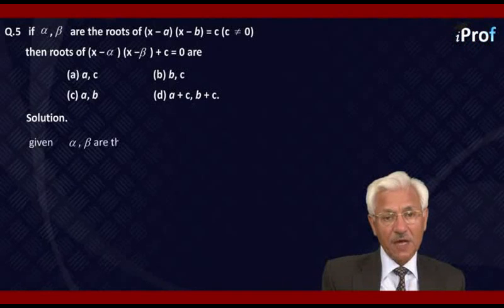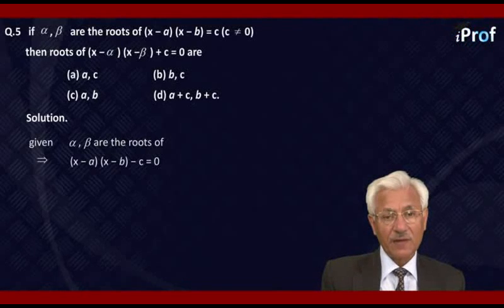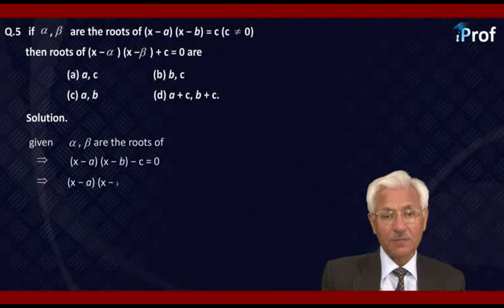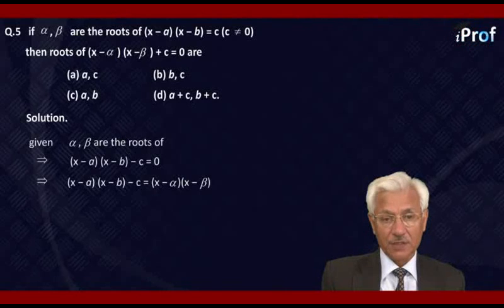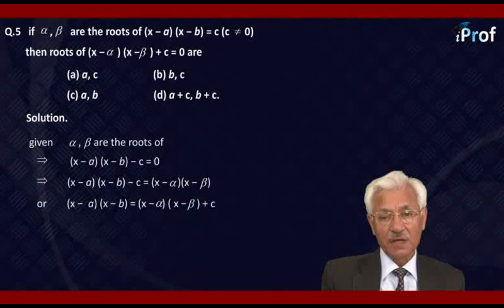Given α and β are the roots of (x - a)(x - b) - c = 0. Therefore, by the factor theorem, its factors are (x - α) and (x - β). That is, (x - a)(x - b) - c = (x - α)(x - β), or in other words, (x - a)(x - b) = (x - α)(x - β) + c.